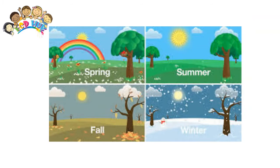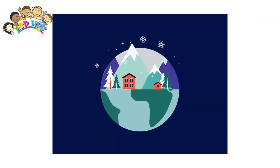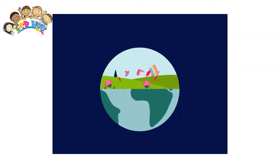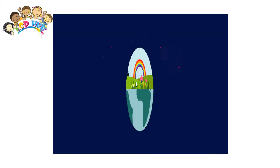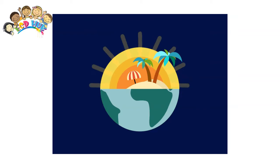Each season lasts three months with summer being the warmest season, winter being the coldest, and spring and autumn lying in between.